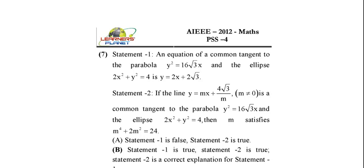Statement 1 says that an equation of a common tangent to the parabola y² = 16√3·x and the ellipse 2x² + y² = 4 is y = 2x + 2√3. Statement 2 says that if the line y = mx + 4√3/m (where m ≠ 0) is a common tangent to the parabola y² = 16√3·x and the ellipse 2x² + y² = 4, then m satisfies m⁴ + 2m² = 24.